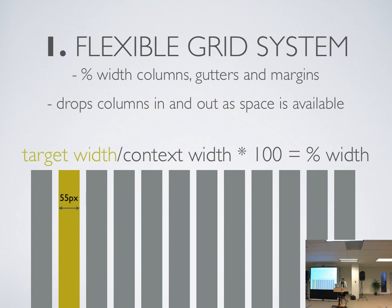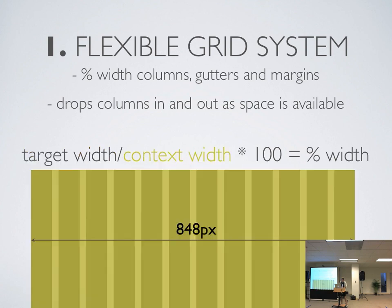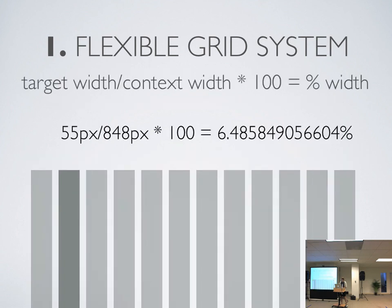It's just this one equation: target width — the desired width of something — divided by context width, the parent width, the total width available, times 100 gives you the percent width. As a super easy example, if you want to find the percent width of a column that's 55 pixels, and the parent is 848 pixels, that gives you 6.48 — plus like 10 more decimal places. Those extra digits are actually really important; you need all the information possible to get a real flexible grid working and looking correctly.